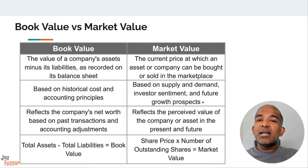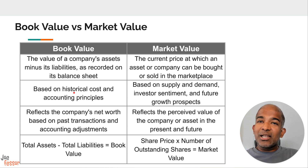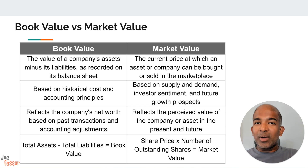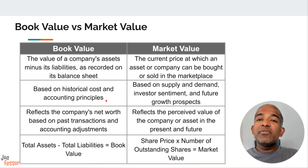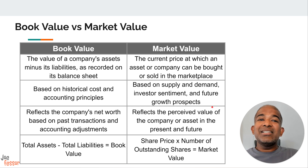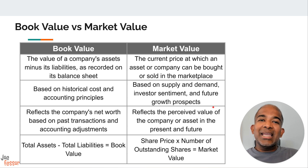So why can book value and market value be so different? Some assets, like land or buildings, might appreciate in value over time, making their market value higher than their book value. Intangible assets like brand recognition or intellectual property might not be fully reflected in the book value, but they can significantly boost the market value. Also, investor sentiment and market trends can cause the market value to fluctuate even if the book value remains relatively stable.